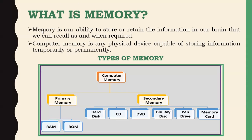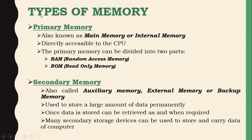Secondary memory is also called auxiliary memory. Primary memory contains RAM, ROM, cache, and registers. Secondary memory includes hard disk, CD, DVD, Blu-ray, pen drives, and memory cards. Primary memory, also called main memory or internal memory, is divided into two parts: Random Access Memory (RAM), which allows both read and write operations, and Read Only Memory (ROM), where only reading is allowed. Auxiliary memory is used to store large amounts of data permanently and can be used to transfer data between computers.